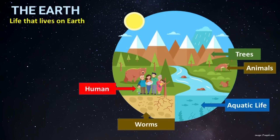Now let us look at the life that lives on Earth. We have trees and plants, we have animals and insects. In the ocean we have aquatic life other than fish, like plankton, nekton, benthos, decomposers, and coral reefs. Underground we have worms. And of course, we also have humans who live on Earth.